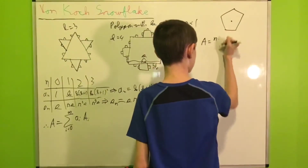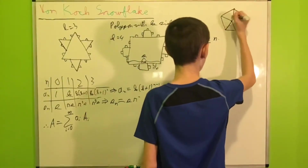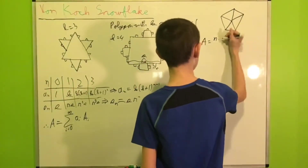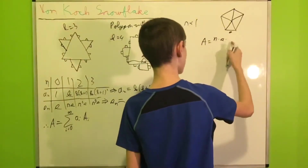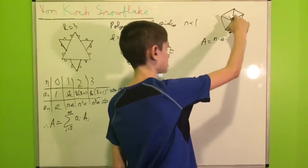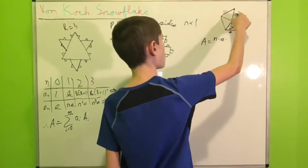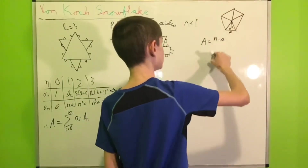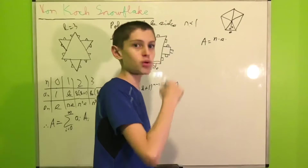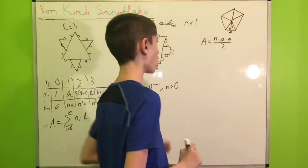For a regular polygon with n sides and side length s: divide it into n triangles from the center. Drop a perpendicular from the center to each base, calling that height a (the apothem). The area of the polygon is n times the area of one triangle, which is s times a over 2, giving: Area equals n times s times a divided by 2.